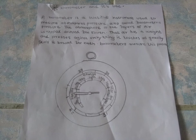A barometer is a scientific instrument used to measure atmospheric pressure, also called barometric pressure. The atmosphere is the layers of air wrapped around the earth. The air has a weight and presses against everything it touches as gravity pulls it towards the earth. Barometer uses this pressure. Here you can see a picture of it. There are actually many types of barometers and this is one of the types that you can see in the picture.